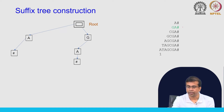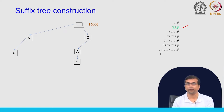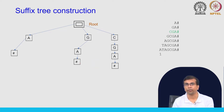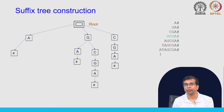We take the next suffix, GA#, adding it from root to leaf ending with the hash. We can continue this process for CGA, GCGA. For GCGA, the first letter G already exists — there is a path from the root to G. So we use that path and then check whether there is a C after the G. There is none, so we construct a new path to get to the leaf.